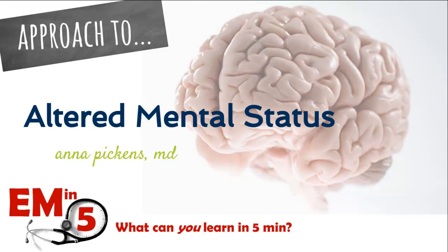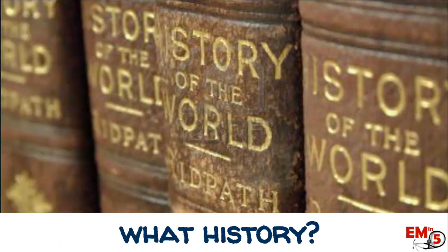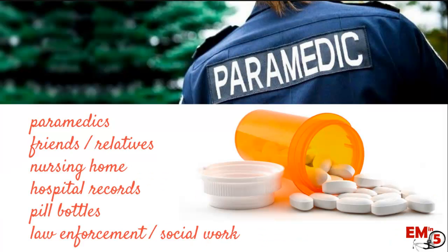This week for EMN5, we're going to talk about the approach to altered mental status. One of the most important things in determining the etiology of a patient with altered mental status is getting a great history. But that's the whole problem — they're altered, you can't get a history from them. So one of the big things with these patients is talking to other people to try to get a better history.